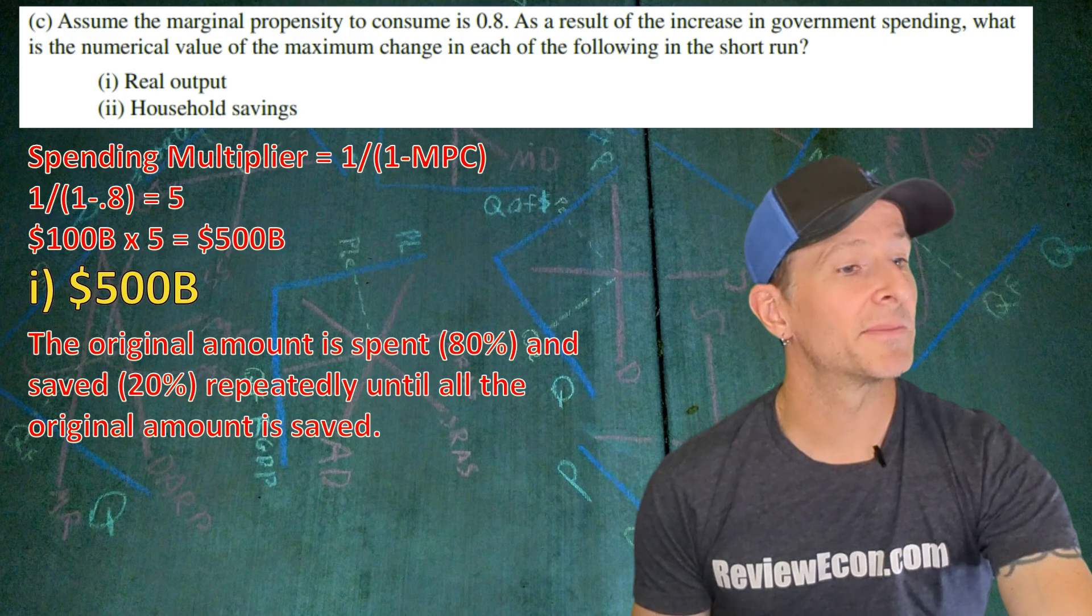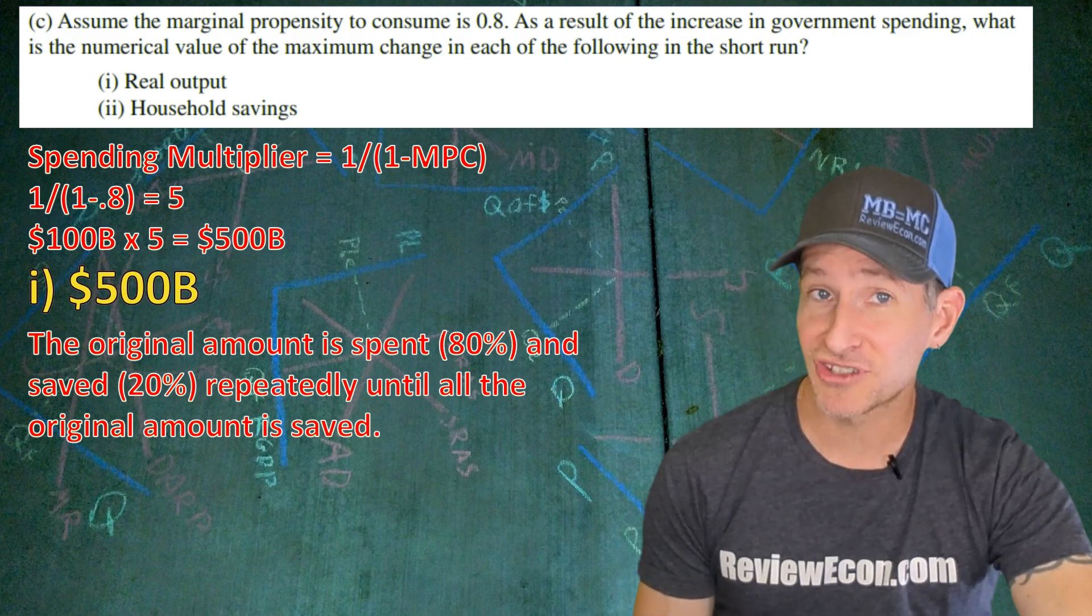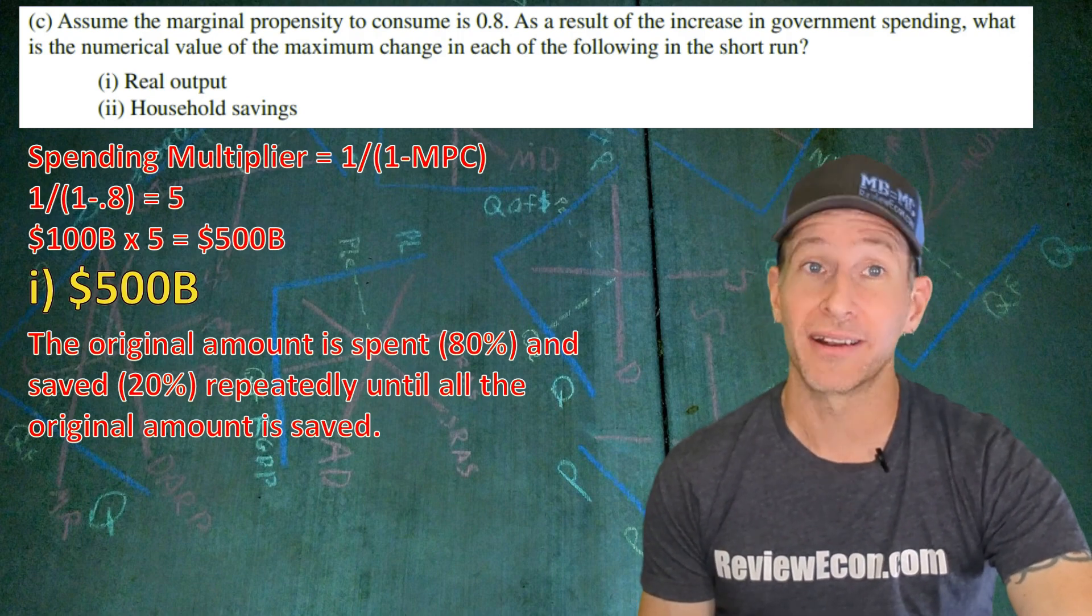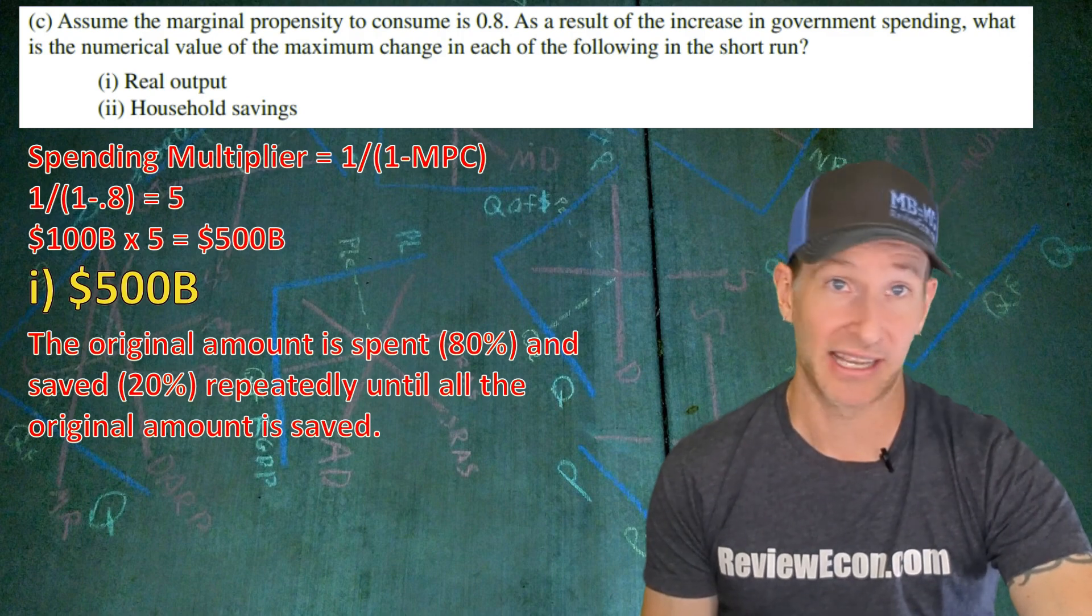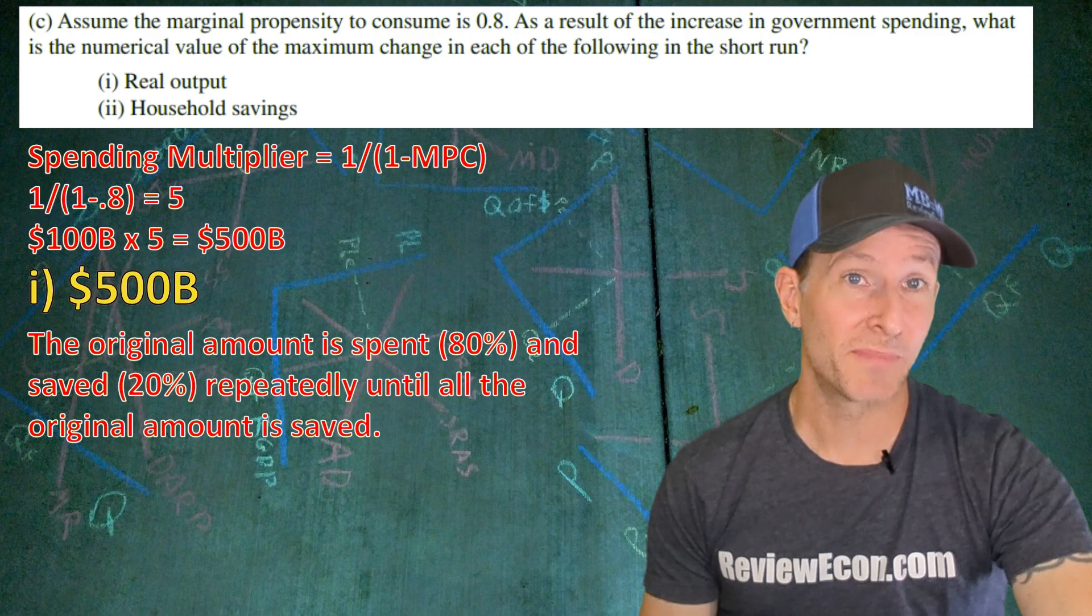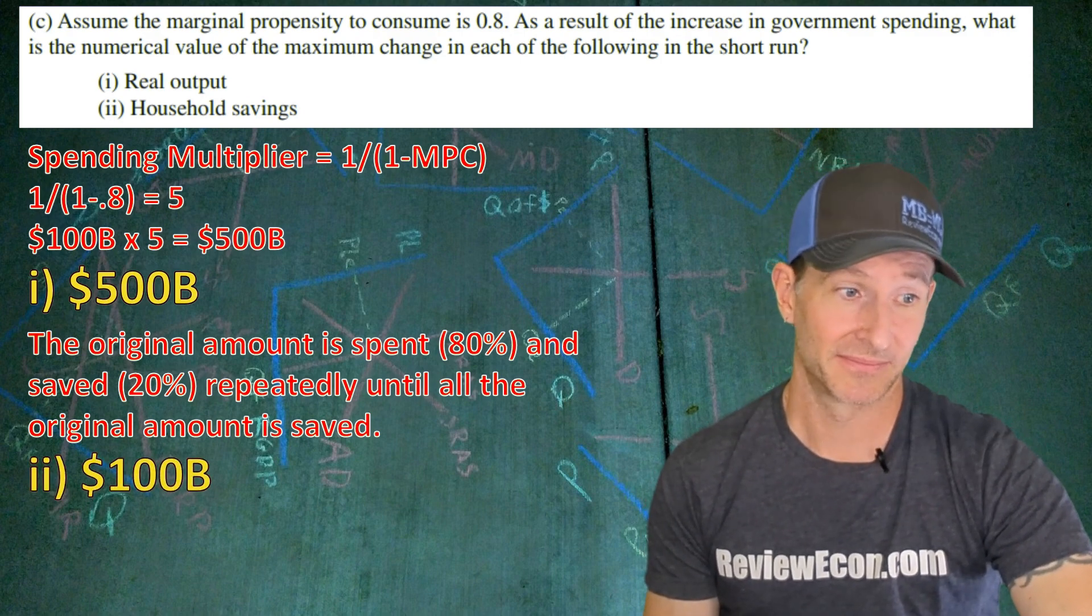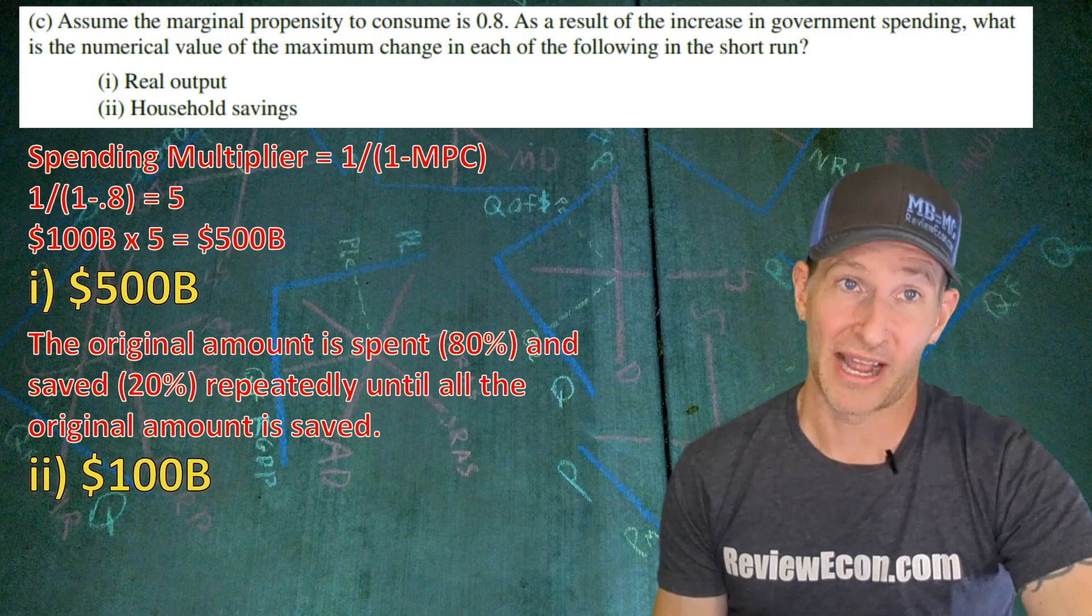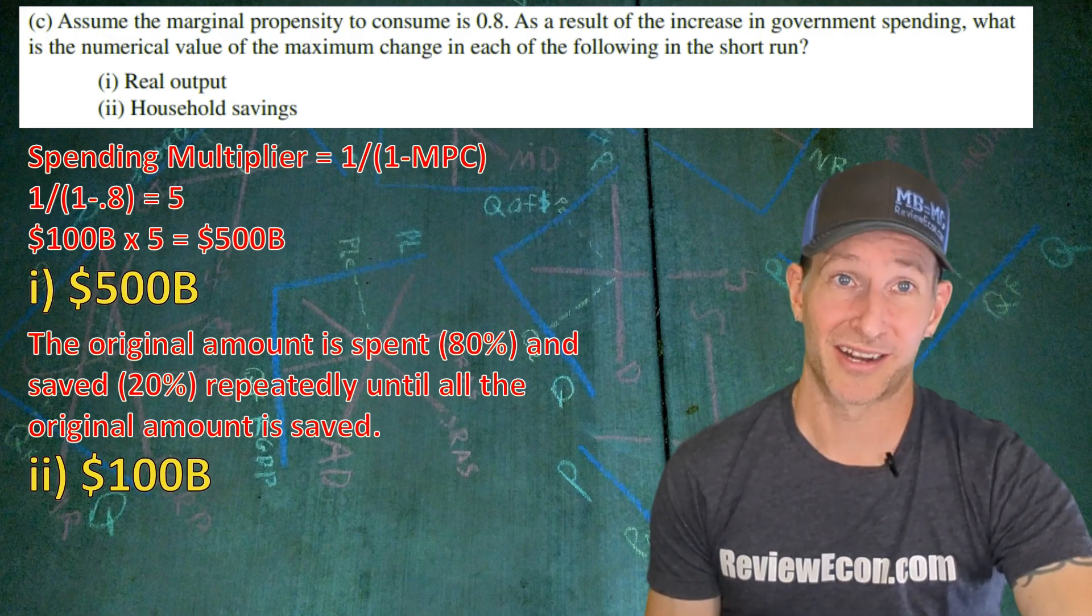For the second answer of part C it's important to remember that the original amount of 100 billion dollars is going to be spent at 80 percent and saved at 20 percent over and over again until the full 100 billion dollars is saved and can no longer be spent. So that original 100 billion dollars will be the maximum increase in household savings. In order to get this point you need to get both CI and CII correct. There's no half points in AP economics.